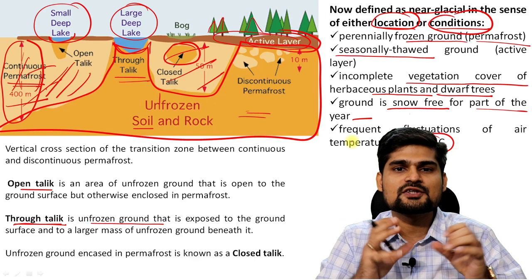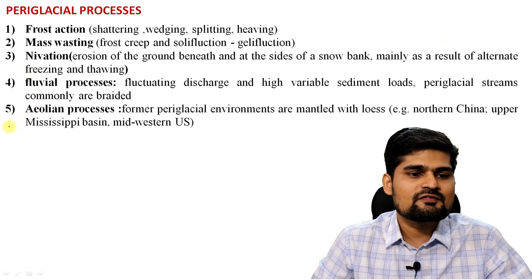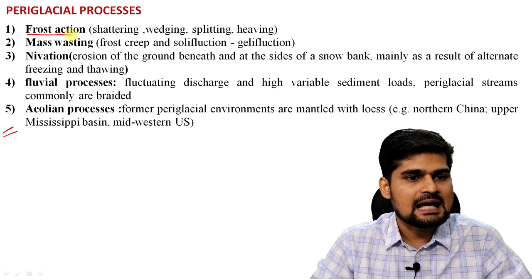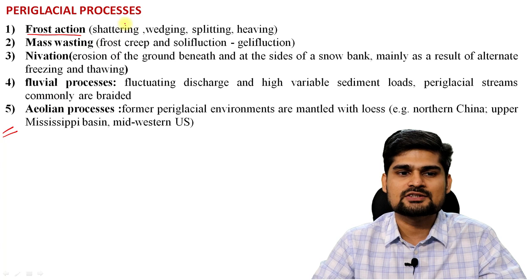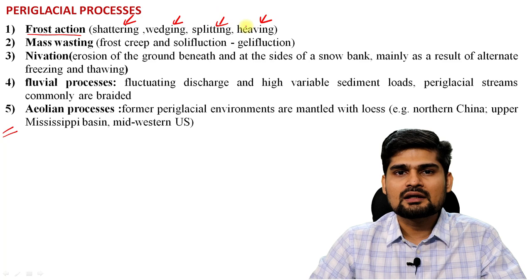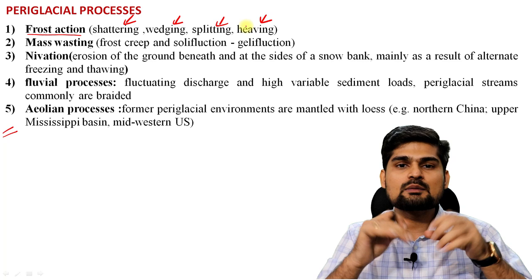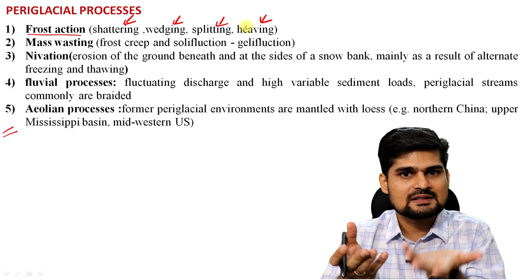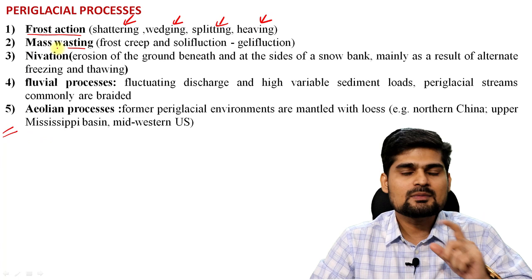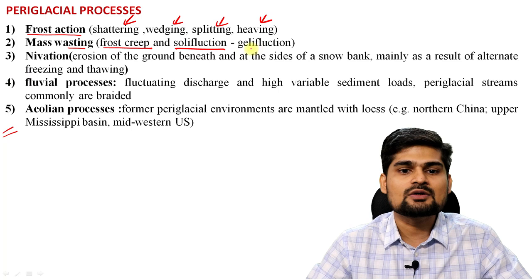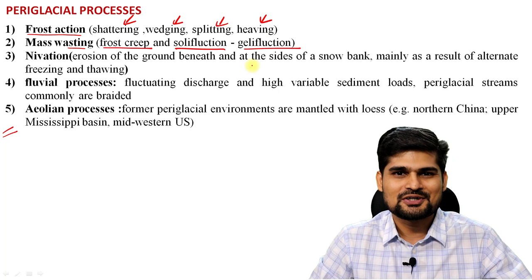There are five major periglacial processes. The first is frost action, which has further sub-types: frost shattering, frost wedging, frost splitting, and frost heaving. Shattering means breaking away, wedging is sharply cutting across, splitting is dividing, and heaving is pushing upwards. Remember, when water freezes its volume increases, so it pushes the land upward if it is in an underground or sub-ground area. The second process is mass wasting, which includes frost creeping and solifluxion — also called gelifluxion — where the semi-molten state of water flows down the slope.